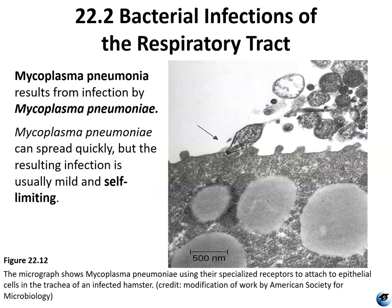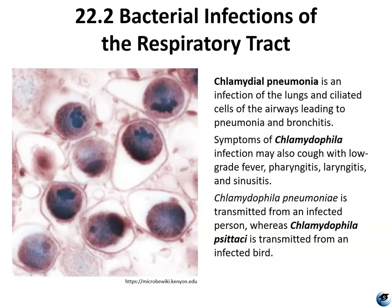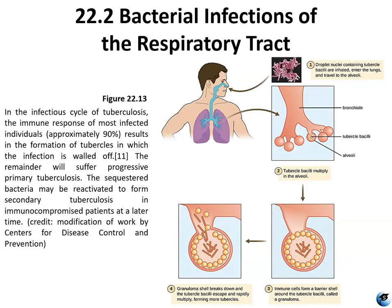Mycoplasma pneumoniae is caused by Mycoplasma pneumoniae. It spreads rather quickly but is quite self-limiting, meaning it has a rapid onset but usually depletes the nutrients in the tissue it's living in because it grows so rapidly, so it doesn't spread to a wide area before it starts to die off. Chlamydial pneumonia is an infection of the lungs and ciliated cells of the airways, causing not only pneumonia but bronchitis. Symptoms include cough, low-grade fever, pharyngitis, laryngitis, and sinusitis.